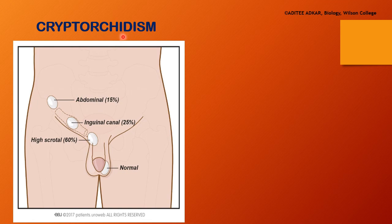Cryptorchidism is the condition where the testes fail to descend from the abdominal cavity through the inguinal canal into the scrotum. The testes remain in the abdominal cavity itself, and as a result cannot produce sperms, because the core body temperature is too high for spermatogenesis. The word cryptorchidism comes from two words: cryptos meaning hidden, and orchis meaning testis — so the testes are remaining hidden inside the body cavity. In this condition, as the testes cannot undergo spermatogenesis, it may lead to sterility in the male.